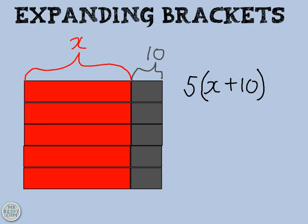Another way to look at it though, which is slightly different, is that I've got x, x, x, x, and x. So that would be 5x. And I've also got 10, 10, 10, 10, and 10. So that's adding on another 50.